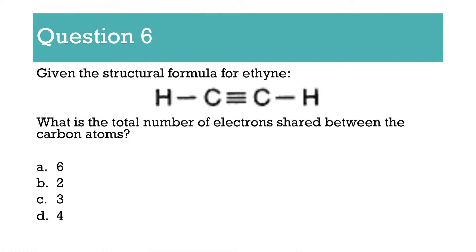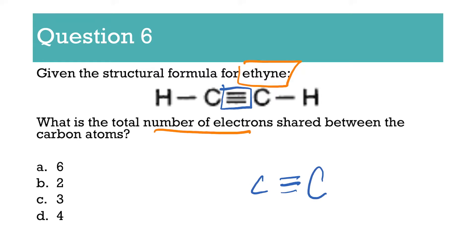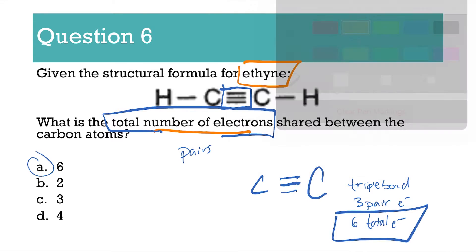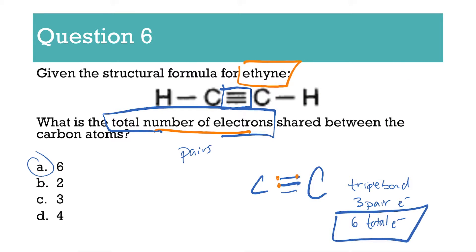Number 6: given the structure for ethyne — you guys don't know what that is yet, but you will when we get to the organic chem unit — it says how many total electrons are shared between the two carbon atoms. You have C, three lines, and a C. Sometimes questions say total electrons, sometimes they say pairs — read carefully. Three lines is a triple bond. A triple bond is three pairs of electrons shared and six total electrons. Each line represents two dots, so you have your six electrons — three pairs, six electrons total.